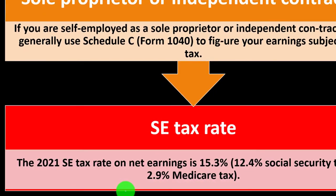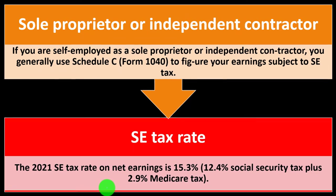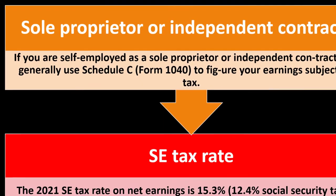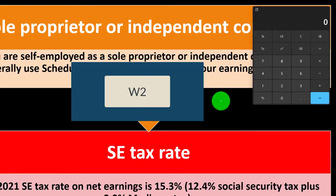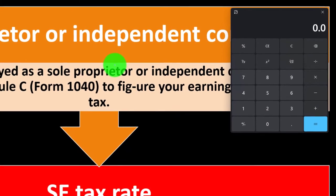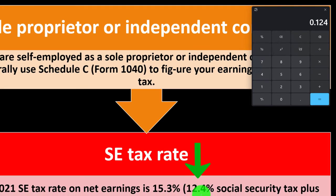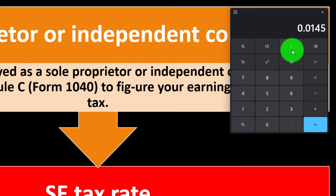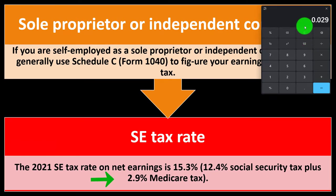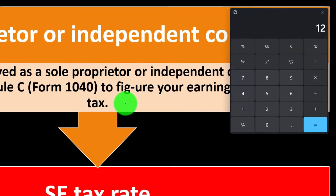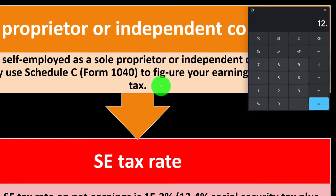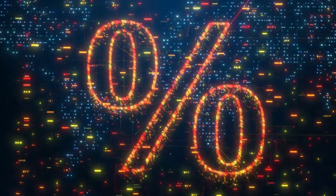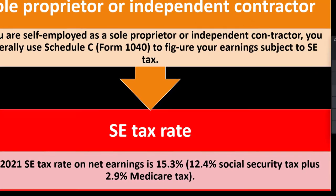Self-employment tax rates: the 2021 self-employment tax rate on net earnings is 15.3% — that's 12.4% for Social Security plus 2.9% for Medicare. If you're used to payroll taxes, those might seem high because they're basically double the employee-only portion. You're paying both the employee and employer halves. If you're used to W-2 withholdings, you're probably used to 6.2% — times 2 gives you 12.4%. On the Medicare side, if you're used to 1.45%, times 2 gives you 2.9%. So 2.9% plus 12.4% equals the total 15.3%.